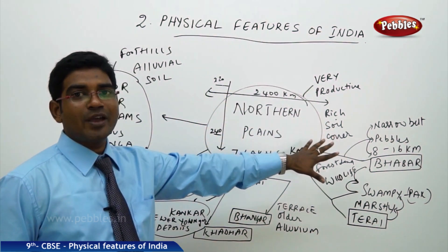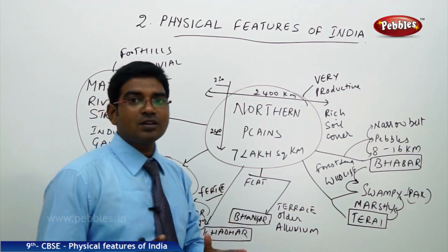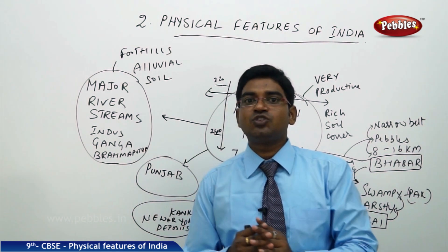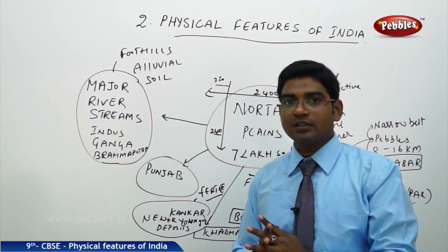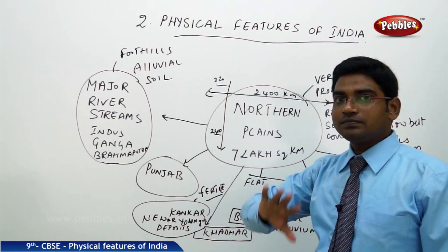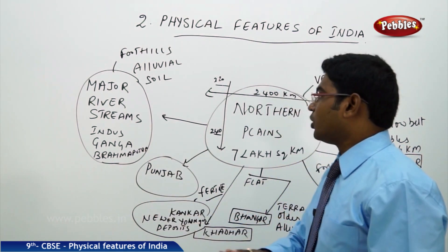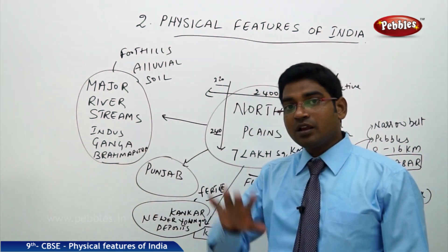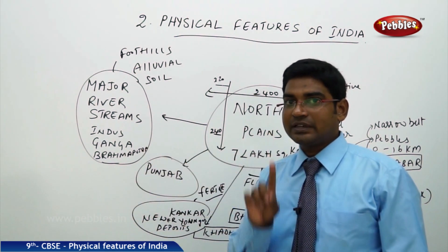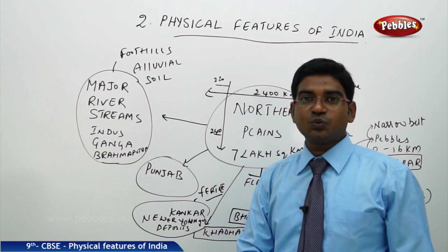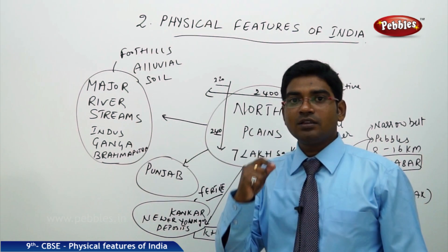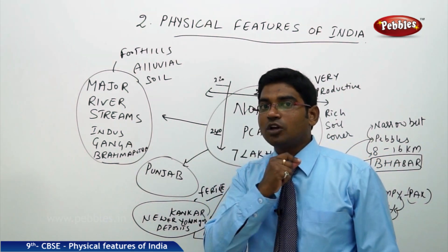The Northern Plains is a very productive land, which is very rich in soil cover, which was brought by the Himalayan rivers, as it is just at the foothills of the Shivalik mountain ranges or the outer Himalayas. It has brought all the alluvial soil down and deposited it at the lower level. When the formation of the Himalayas itself occurred, there was a large basin which was created, and ultimately we got the most fertile plain land for India — that is the Northern Plains.